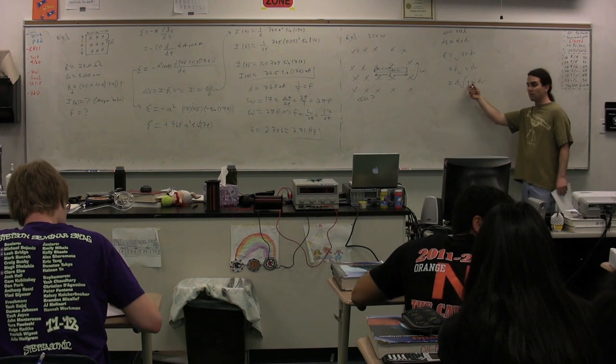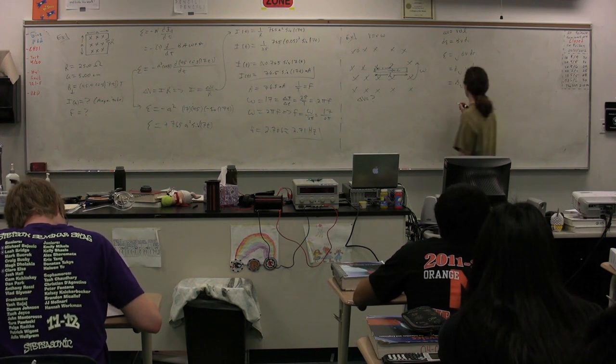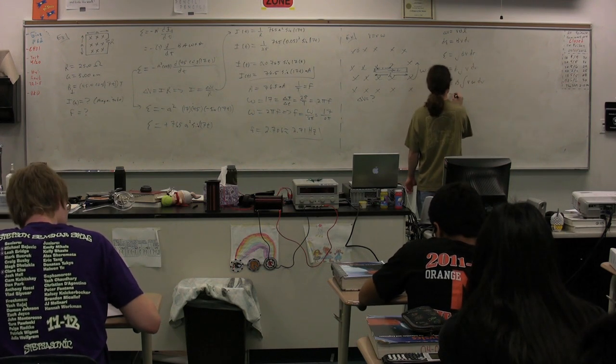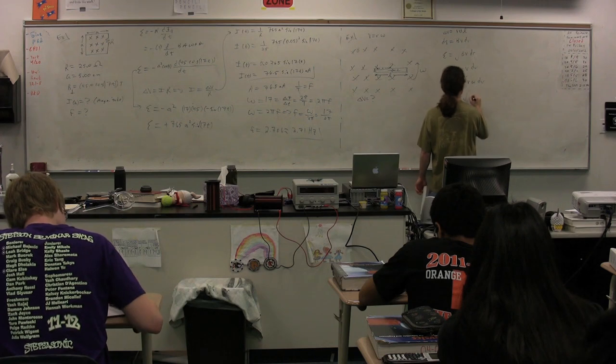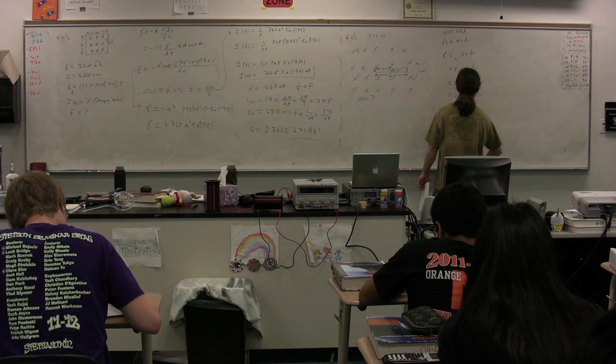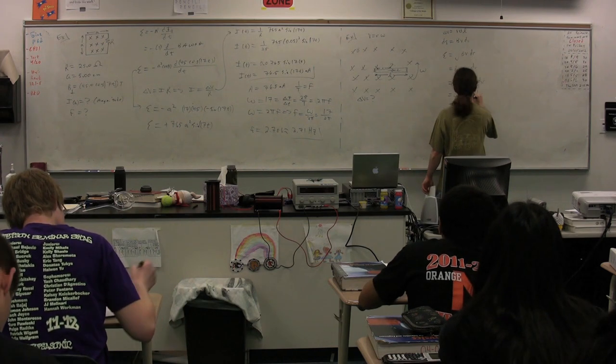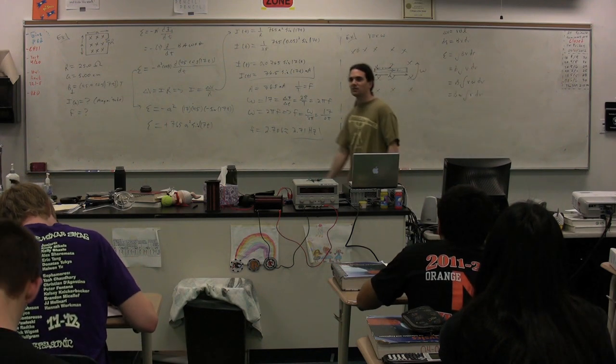Correct. The tangent velocity is equal to the radius times the angular velocity, we can take the radius out. I'm sorry, we can take the angular velocity out. B times the angular velocity integral of r dr. So what are the limits then on this integral?